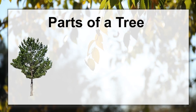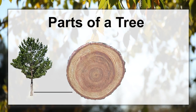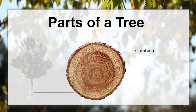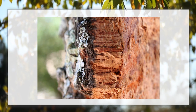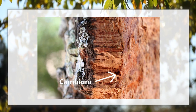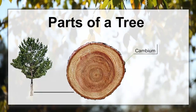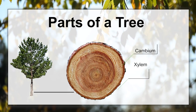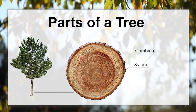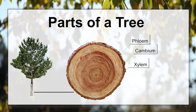By looking at a tree cookie you can also learn about the different parts of a tree. Let's start with the cambium. This is a layer of cells that's just very, very thin inside the inner bark. The cambium produces the xylem and the phloem cells, and this is where the diameter growth occurs.